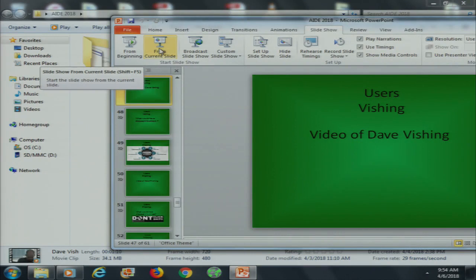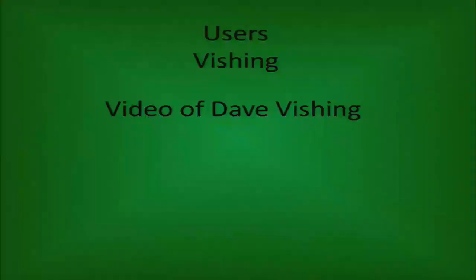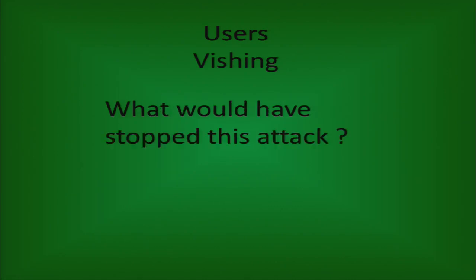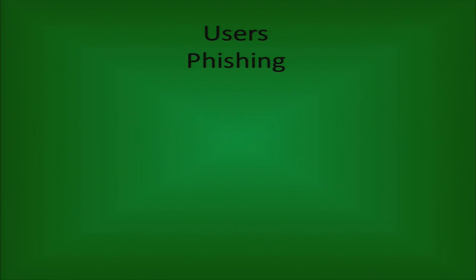So there's Dave on CNN basically pwning some tech support guy in a company he was paid to test. I haven't done a vishing program at my office yet — we don't have a help desk — but we're going to look at that going into this summer. What would have prevented that? Education. They looked like it was an inside call — that's really it.